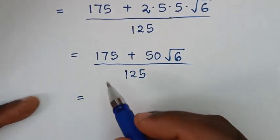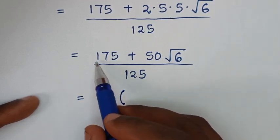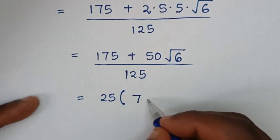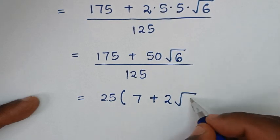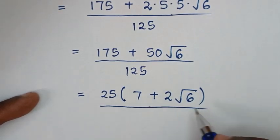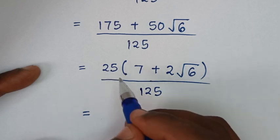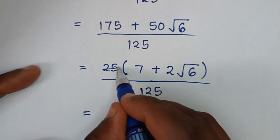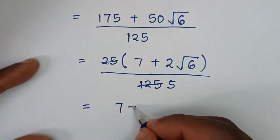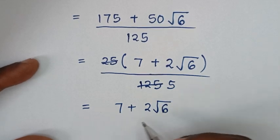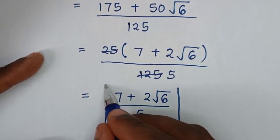Then it will be equal to: 25 divided by 25 is 1, 125 divided by 25 is 5. So it will be 7 plus 2 square root of 6, over 5. So this is the simplified form — the same as the answer in the first method.